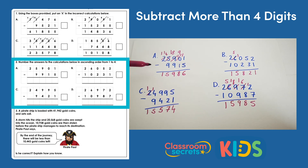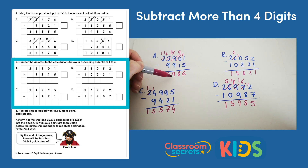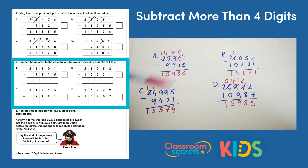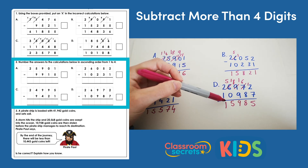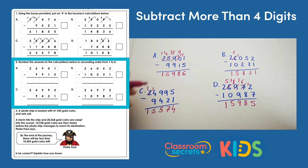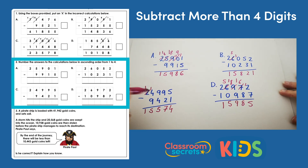Which number is the smallest? We know they're all 15,000, so we can't use the ten-thousands or thousands to compare, but we can look at the hundreds. In a there is a 9 in the hundreds column; in b there is an 8; in c there is a 5; and in d there is a 9. So c, 15,574, is the smallest.